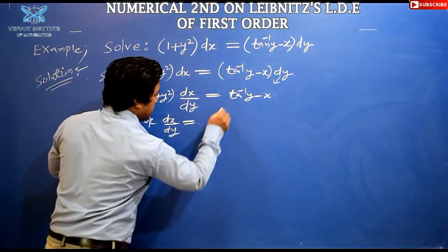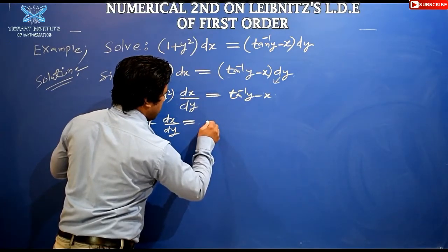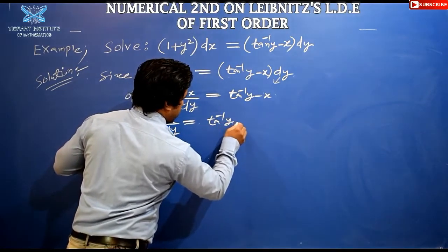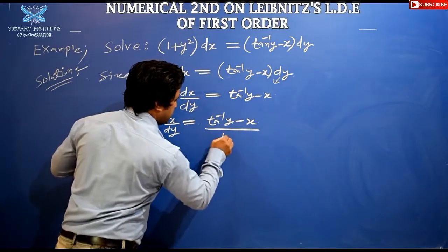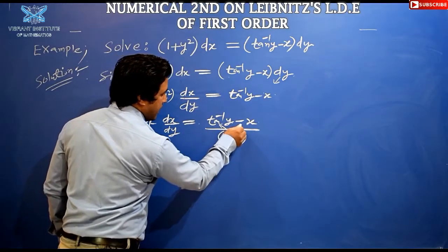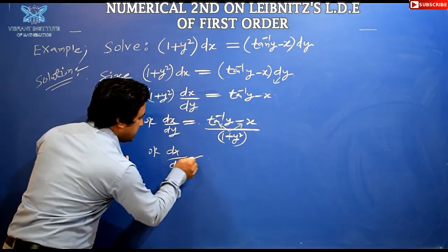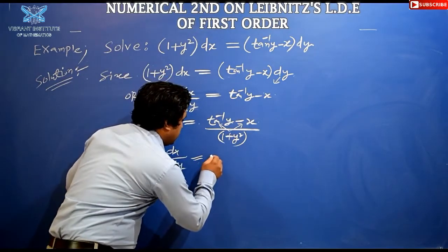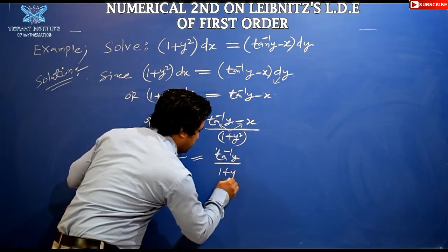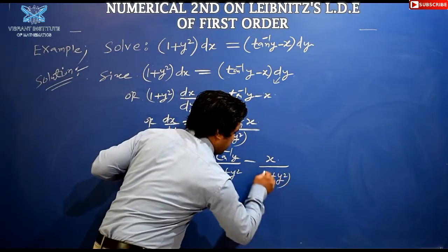This gives us dx/dy = (tan⁻¹y − x) divided by (1 + y²). Splitting the right-hand side: dx/dy = tan⁻¹y / (1 + y²) − x / (1 + y²).